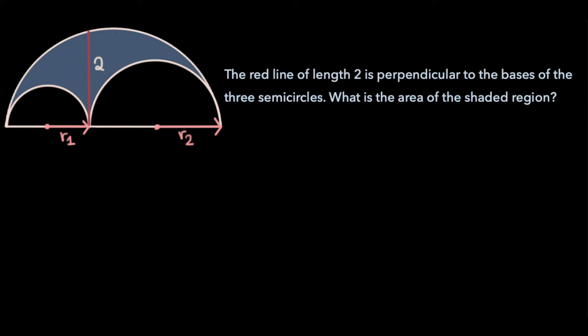Now the area of the shaded region is nothing but the area of the larger semicircle minus the areas of the two smaller semicircles. And so, if we were to write the area of the shaded region in terms of r1 and r2, it would be π/2 times (r1 + r2)² minus π/2 r1² minus π/2 r2².